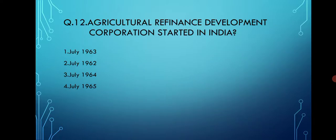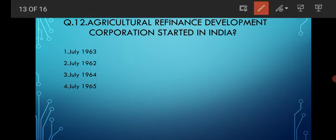When was the Agriculture Refinance Development Corporation started in India? Options are July 1963, July 1962, July 1964, and July 1965. The correct option is option number one, that is July 1963.